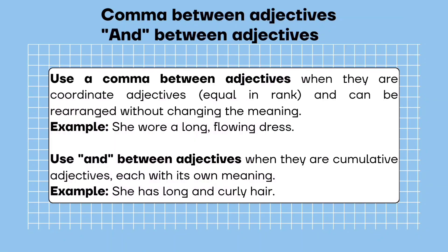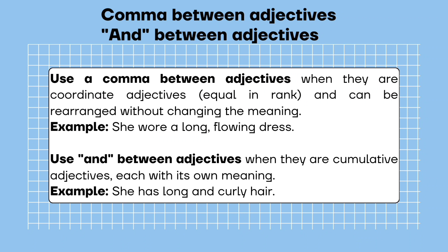Comma between adjectives: use a comma between adjectives when they are coordinate adjectives, equal in rank, and can be rearranged without changing the meaning. Example: she wore a long, flowing dress. And between adjectives: use 'and' between adjectives when they are cumulative adjectives, each with its own meaning. Example: she has long and curly hair.